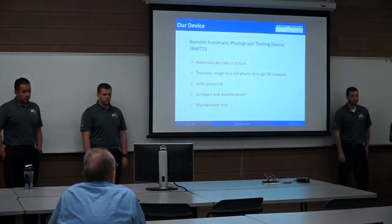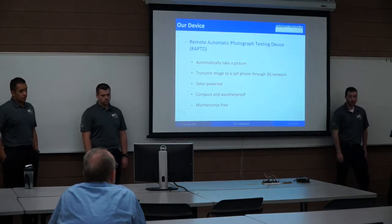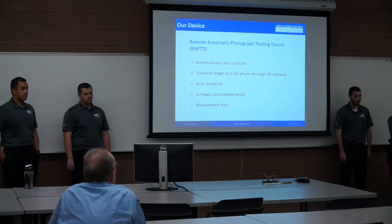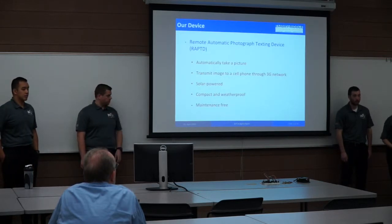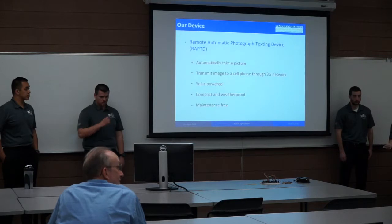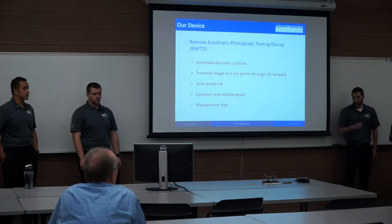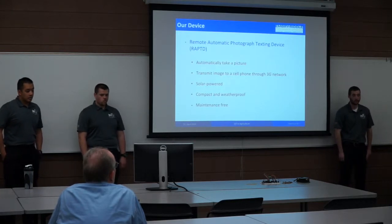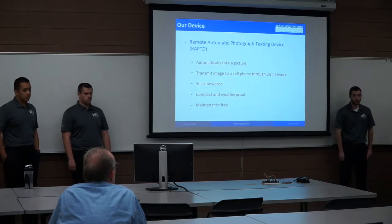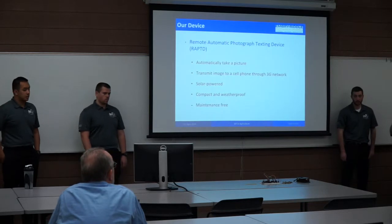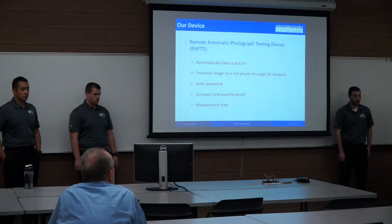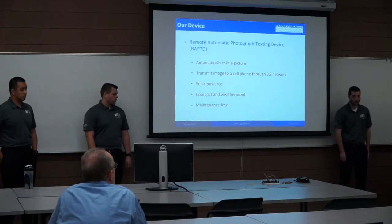Our device is the Remote Automatic Photograph Texting device — we reference it as the RAPT. The purpose of this device is to automatically take a picture once a day and transmit that image through a cellular 3G network to a user's phone. This device is solar powered, compact, and weatherproof — you can see it's that black box right there. It also has to be maintenance free, so when a user powers it on and leaves it in the field, they don't have to keep going back out.